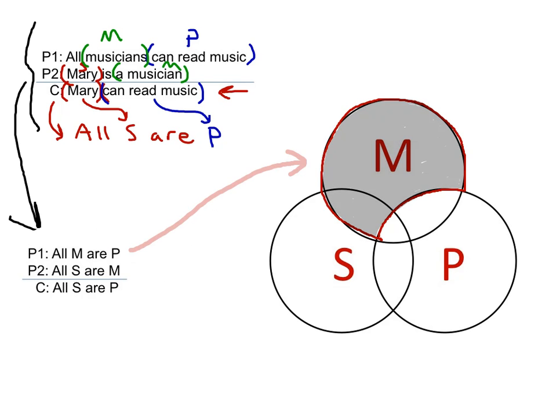So here we've correctly diagrammed the first premise, all M are P. We recognize all M are P is of the form all S are P. And since we know how to diagram that, we know that the region that we need to shade out is the region of M that isn't in P. So we would pull that piece out such that if there is an M, it's in the member of the P class.